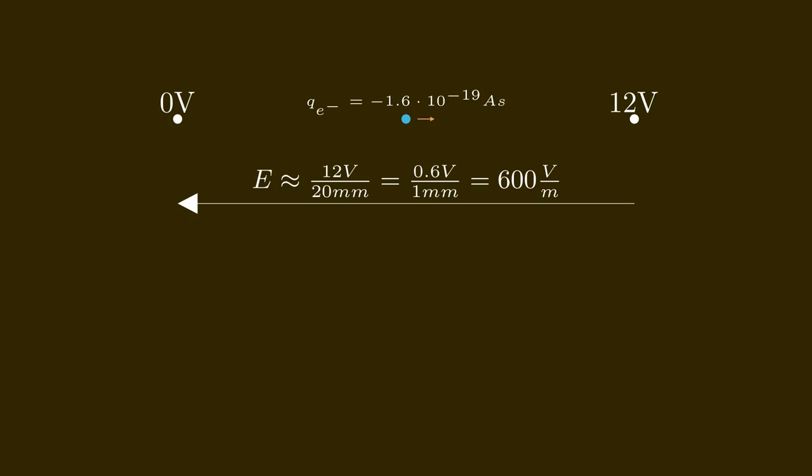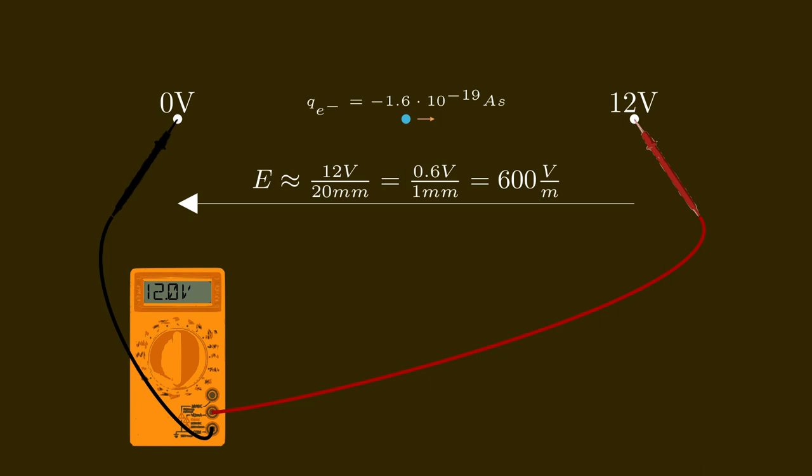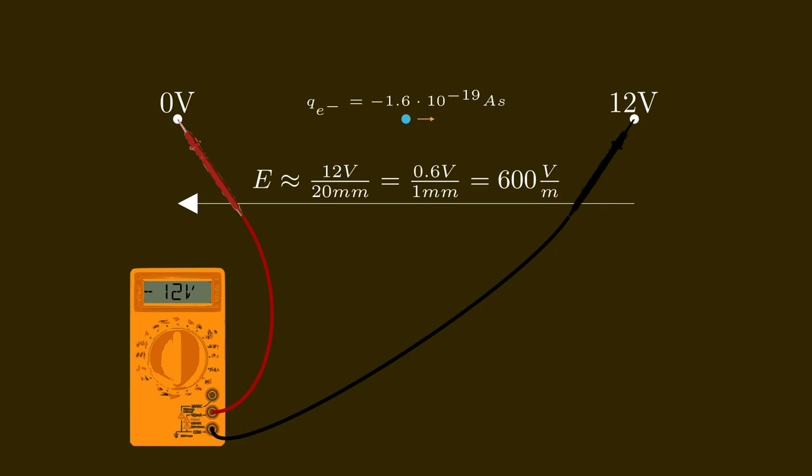If an electric charge is placed between the poles, the electric field will apply a force on this charge. The force is proportional to the electric field and to the amount of charge. If our test charge happens to be an electron, this electron has a charge of minus 1.6 times 10 to the power of minus 19 ampere seconds. As the charge is negative, the resulting force will also go in the other direction. In everyday life we are not so much concerned with electrical force, but we usually talk about electric potential and voltage. For example, we might check the voltage of our car battery using a pocket multimeter — connecting the black cable to the minus pole and the red cable to the plus pole — and our multimeter shows a voltage of 12 volts.